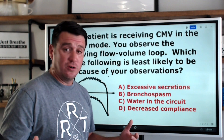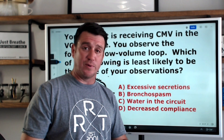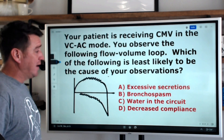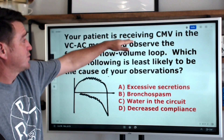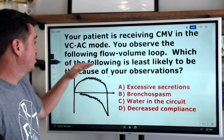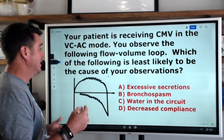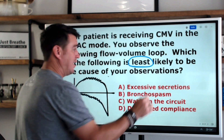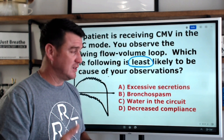Now we're going to work through two practice questions. Your patient is receiving CMV — continuous mandatory ventilation — in the volume control assist-control mode. You observe the following flow volume loop. Which of the following is the least likely to be the cause of your observations? Key thing here: least likely, not most likely.